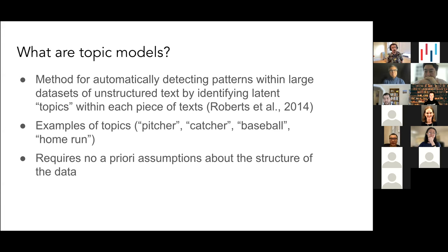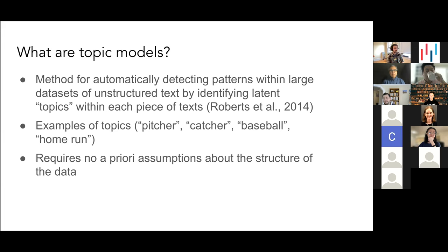Topic modeling is a method for detecting patterns within large datasets of unstructured text by identifying latent topics within each piece of text. It's a form of unsupervised machine learning, which means you don't have to have labeled data — you just put data in and it will automatically detect, based on associations between specific phrases and words, what the underlying topics are. For example, imagine two articles from the sports page — one about baseball would have terms like pitcher, catcher, home run, umpire. An article about American football would have yard, touchdown, field goal.